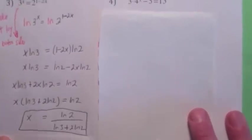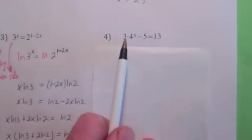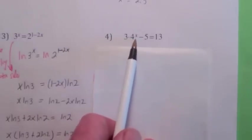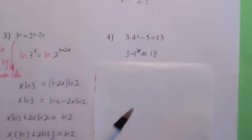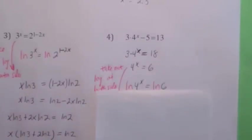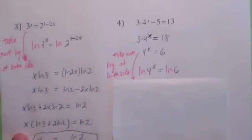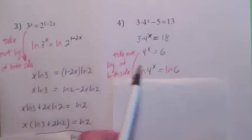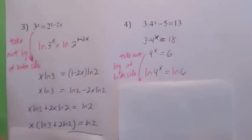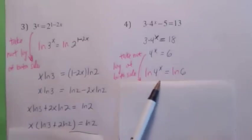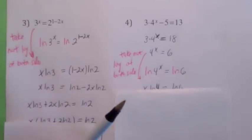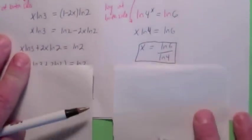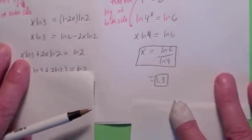If you have something like 3 times 4 to the x minus 5 equals 13 — and that dot is a multiplication sign, not a decimal — before taking the natural log of both sides, you want to get the exponential by itself first. So add 5, then divide by 3. Now you have 4 to the x equals 6. What exponent would you raise 4 to to get 6? It would be about 1-point-something, which seems reasonable. Take the natural log of both sides, bring down the x, divide by ln(4), and you get ln(6) over ln(4), which is about 1.3.